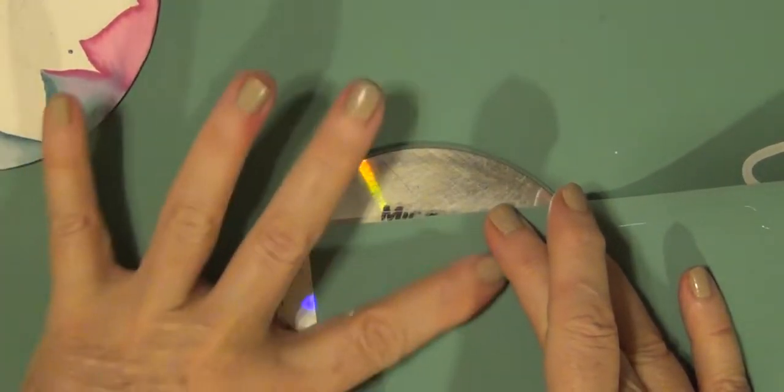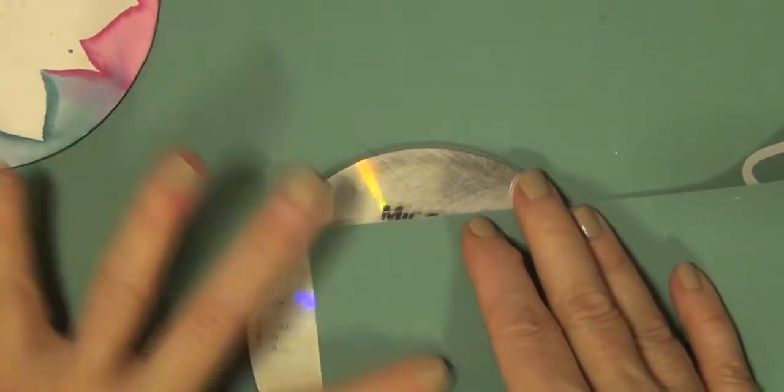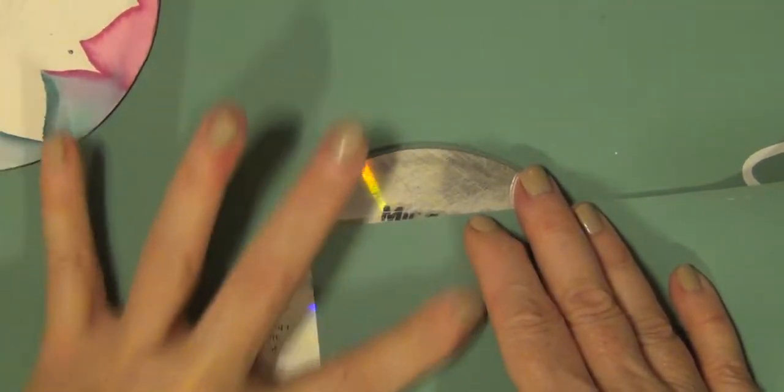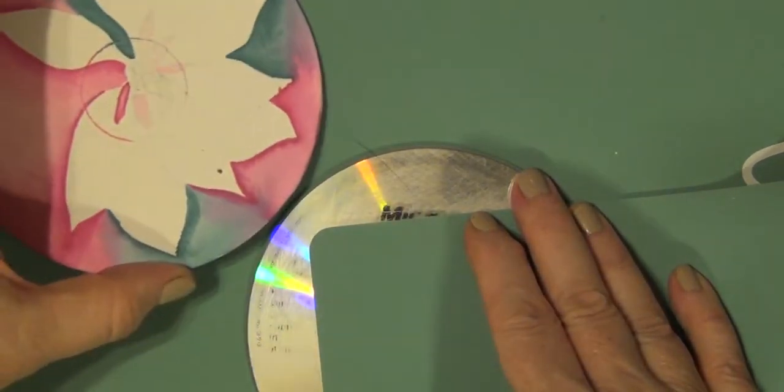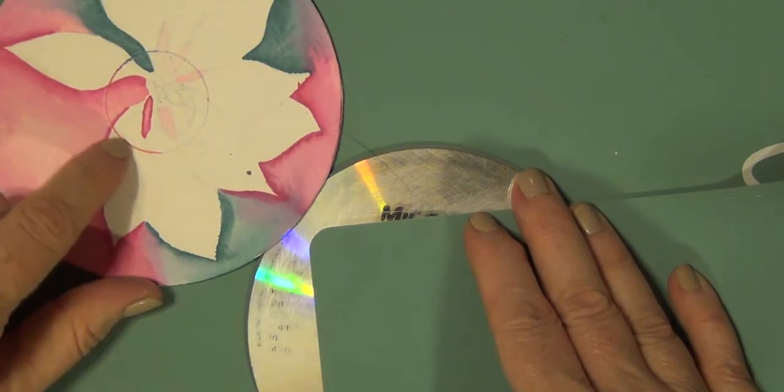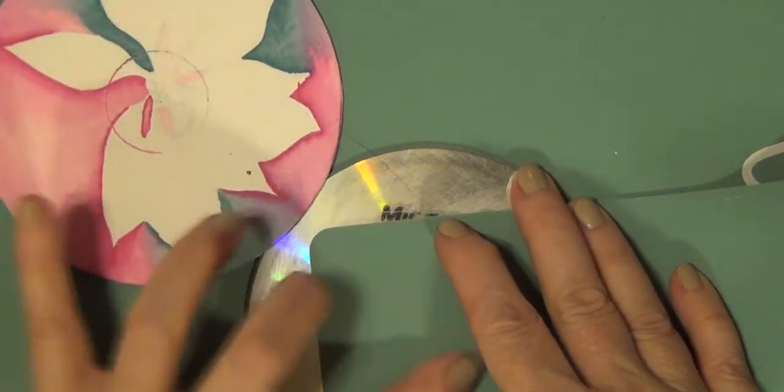Fold whatever you've got over on top and just kind of rub it and act like you're burnishing it in. And again, you're doing this on the side that does not have that ridge. Now it's got a little valley.